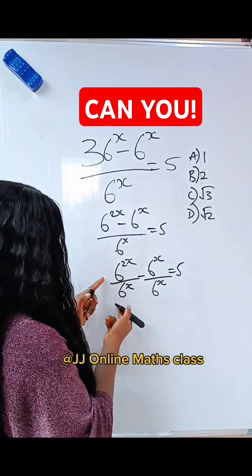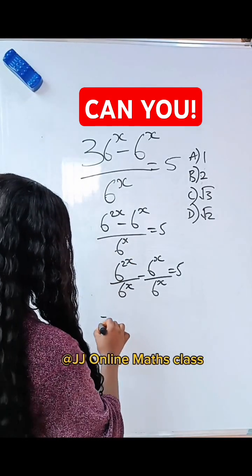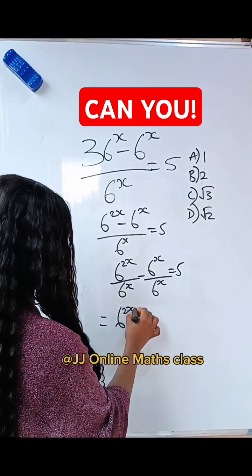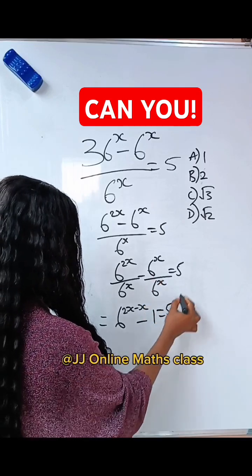Now, recall that when you have the same base dividing, you just pick one base and subtract the powers. So we can solve this as 6 to the power of 2x minus x minus this divided by this will give us 1 is equal to 5.